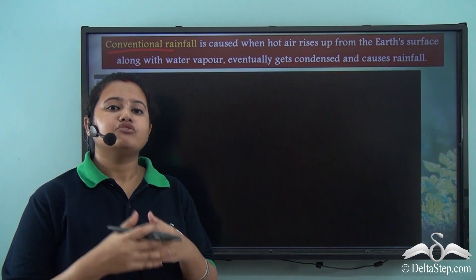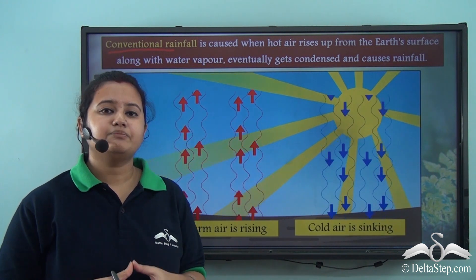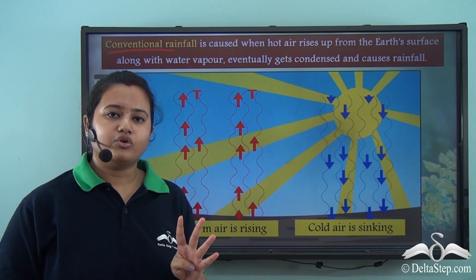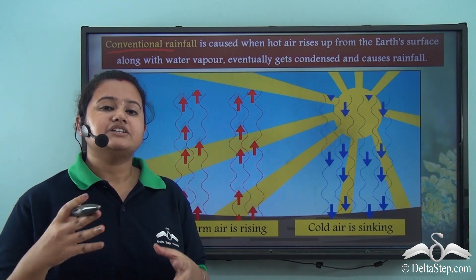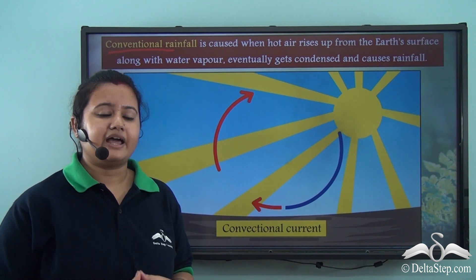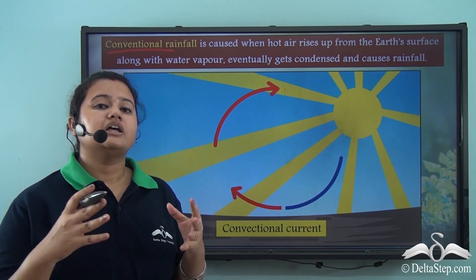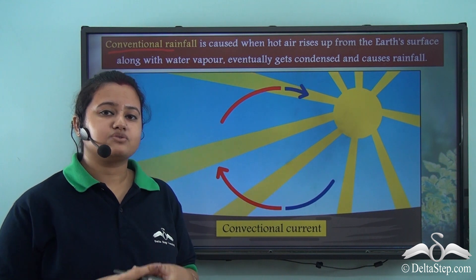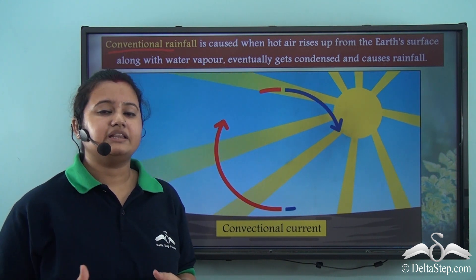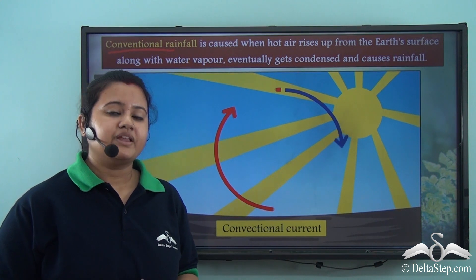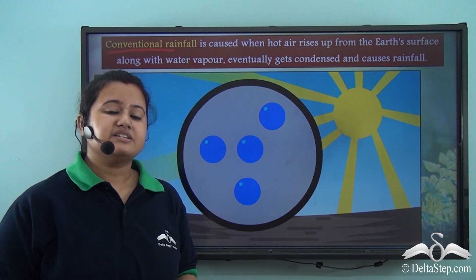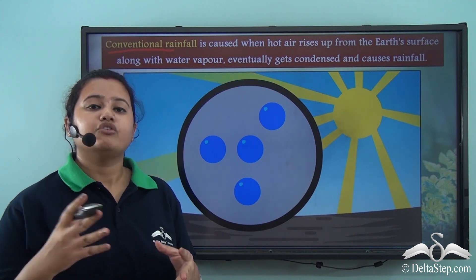The 4 o'clock shower is a type of convectional rainfall which occurs every day at 4 o'clock. During daytime, the earth's surface receives heat from the sun, and by the time of afternoon, cloud formation is complete. The clouds thus formed eventually shed rainfall in the afternoon, and therefore the equatorial region experiences rainfall every day at 4 o'clock.